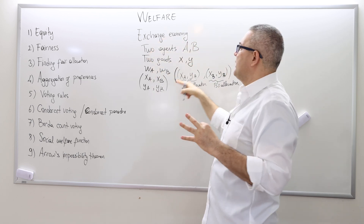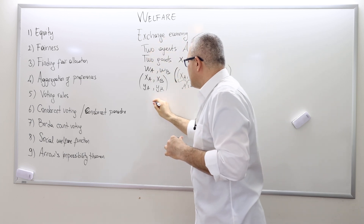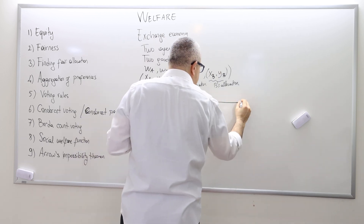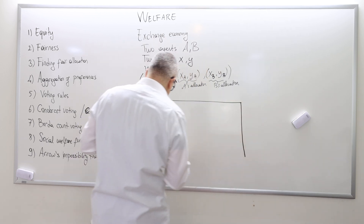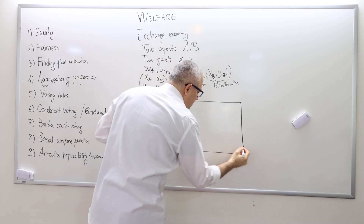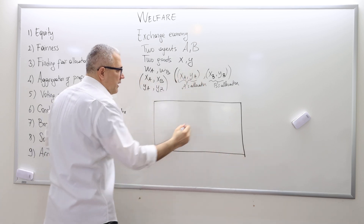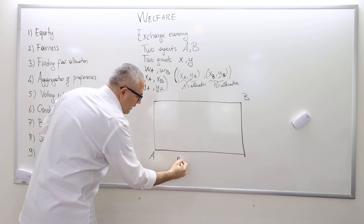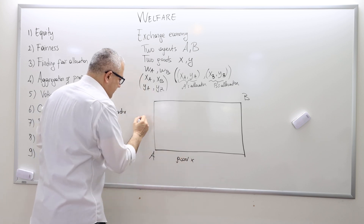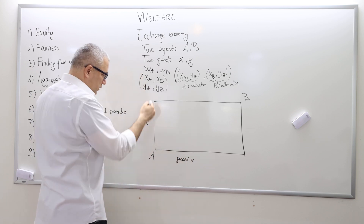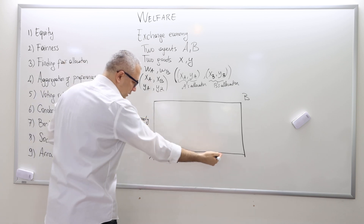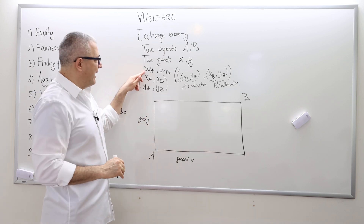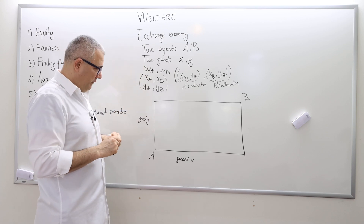Given the exchange economy with two agents and two goods, we draw the Edgeworth box, which basically represents the set of all feasible allocations. We put agent A here, agent B here. This is the coordinate for good X, this is the coordinate for good Y, total number of good Y, total number of good X, which we basically find by adding up the initial endowments.